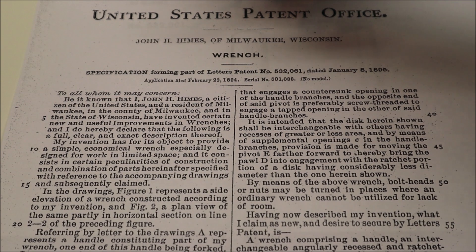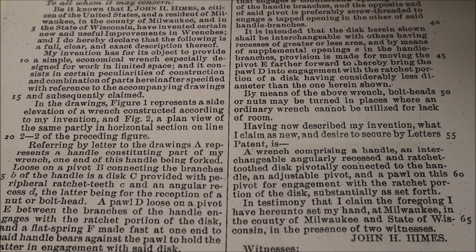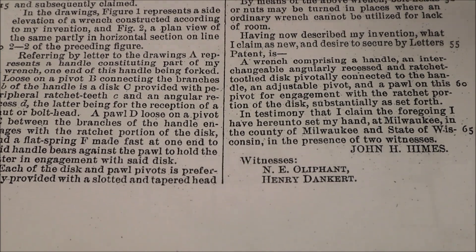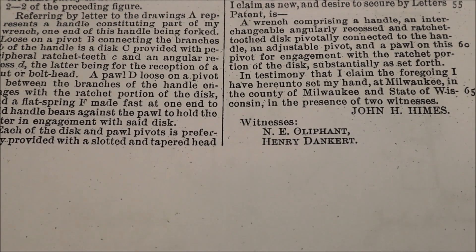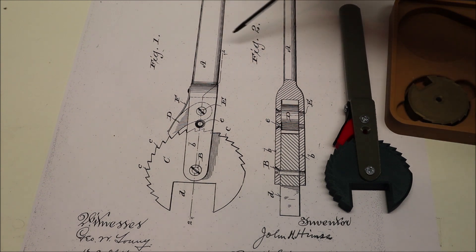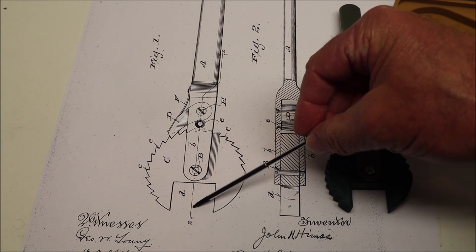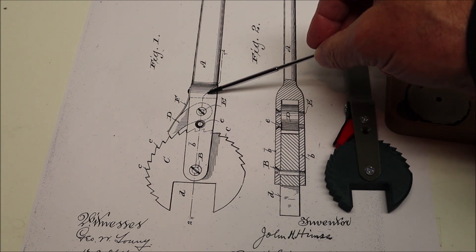On this sheet is the specification for the wrench. Figure 1 is a side view of the wrench and figure 2 is a section view based on this section line to the center of the wrench.